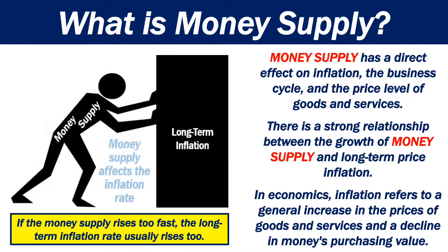Money supply has a direct effect on inflation, the business cycle, and the price level of goods and services. There is a strong relationship between the growth of money supply and long-term price inflation. In economics, inflation refers to a general increase in the prices of goods and services and a decline in money's purchasing value. If the money supply rises too fast, the long-term inflation rate usually rises too.